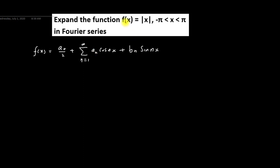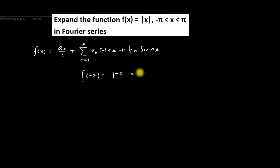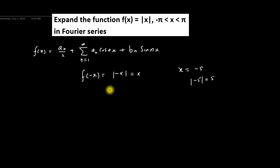Before finding these values, we have to check whether the given function is an even or odd function. For this we replace x by -x: f(-x) = |-x| = |x|. For example, if x = -5, then |-5| = 5. So we can say that this given function is an even function. In case of an even function, bₙ = 0.